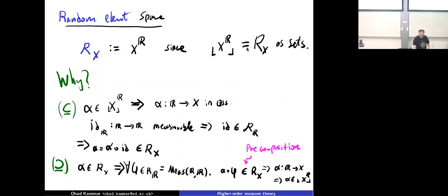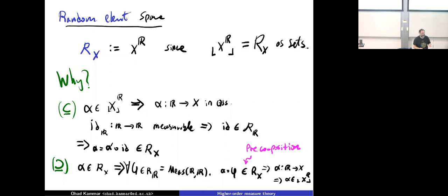Thanks to this we've proved the equality: the points of X^R are exactly the random elements. This means we have a canonical quasi-Borel space structure on random elements — they're not just points, they have a space structure given by the function space. So we have a space of random elements — we can internalize what it means to be a random element.